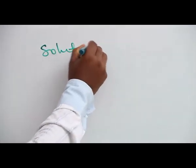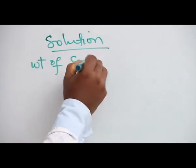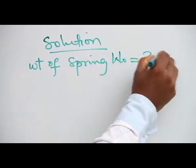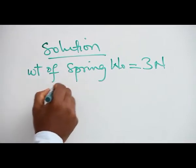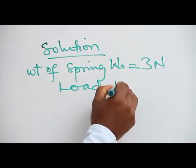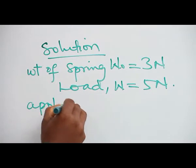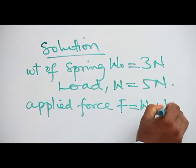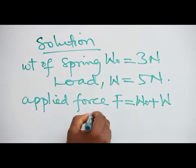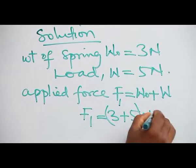The solution is as follows. Weight of spring is 3 N. When 5 N load hangs on it, F1 will give us 3 plus 5 N, which is 8 N.